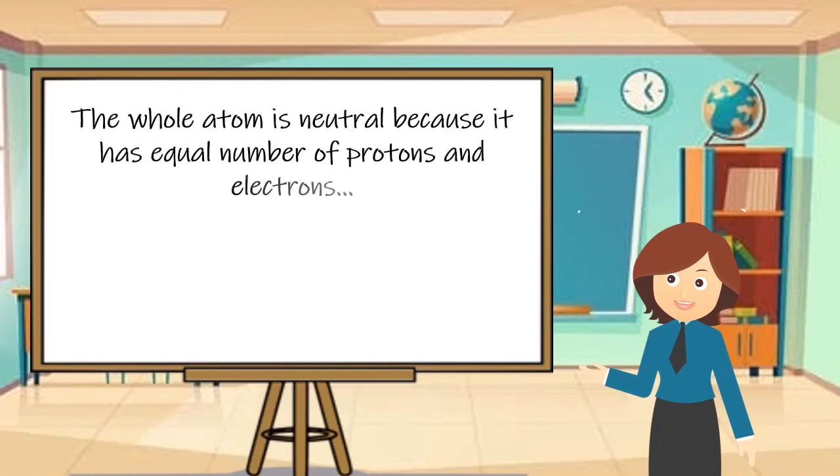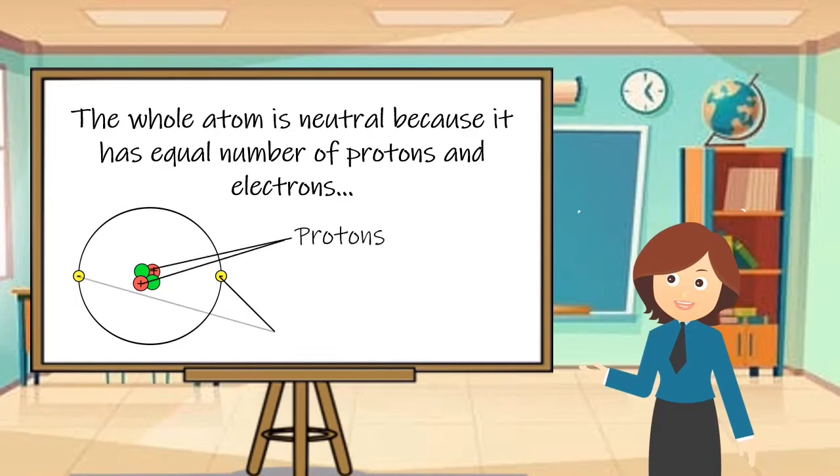The whole atom is neutral because it has an equal number of protons and electrons. Here is an example. This is the atomic structure of a helium atom. As you can see, there are two protons and two electrons. Thus the atom is neutral.